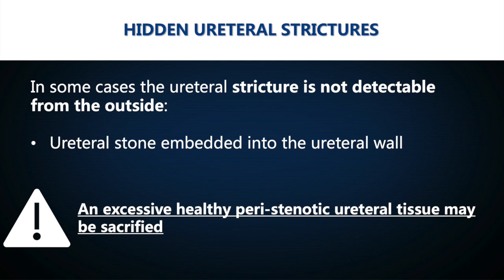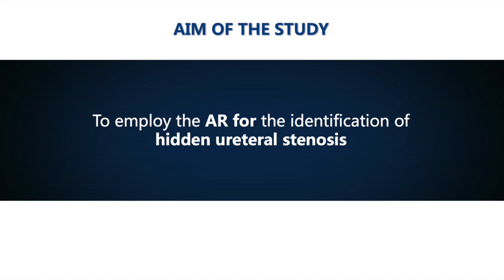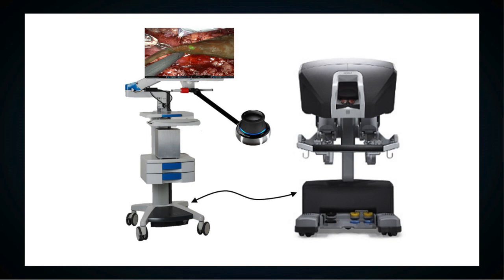In cases of upper ureteral strictures not detectable on the organ surface, as happens for stones embedded into the ureteral wall, augmented reality technology can allow precise identification of the target, minimizing the removal of peristenotic healthy tissue. To perform augmented reality intraoperative navigation, a dedicated icon rack is connected to the Da Vinci surgical console and a 3D mouse is used by the assistant to superimpose manually the 3D virtual model on the operative field. The surgeon can visualize the superimposed images in real time via TilePro technology.